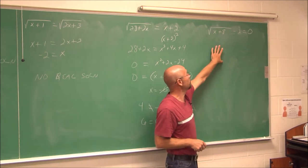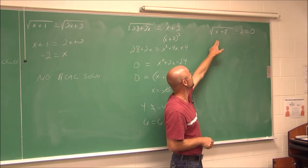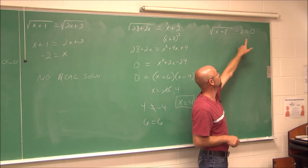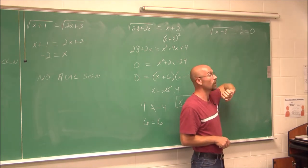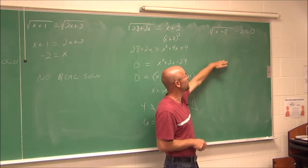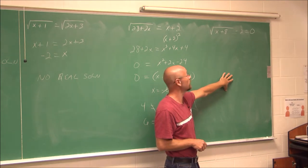I'm going to leave this example for you to try: the square root of x plus 8 minus 2 equals 0. Give that a try, make sure you check your work.